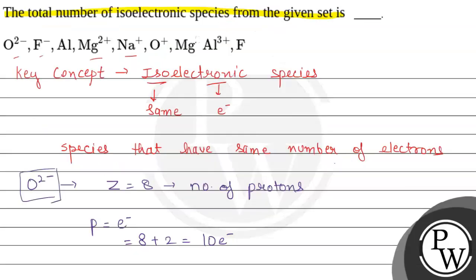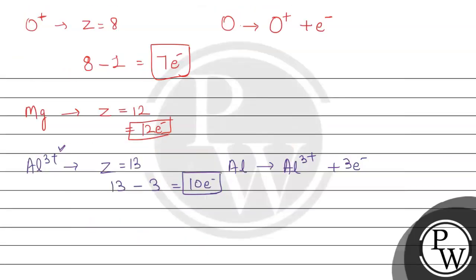The last species is neutral fluorine atom. Fluorine given is neutral and its atomic number is 9 only. So the number of protons and electrons are equal to the atomic number. It will have 9 electrons.